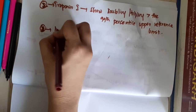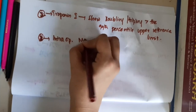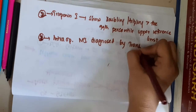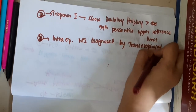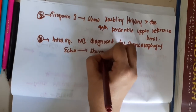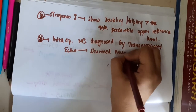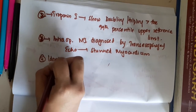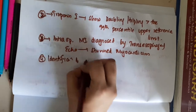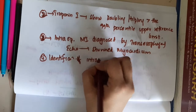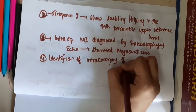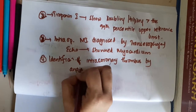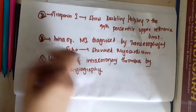Third criteria: presence of intraoperative MI diagnosed by transesophageal echocardiography, which shows stunned myocardium. Fourth criteria: identification of an intracoronary thrombus by angiography. Among these four criteria, one should be present for calling it MI.